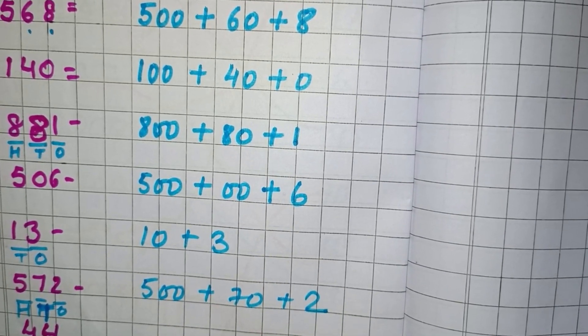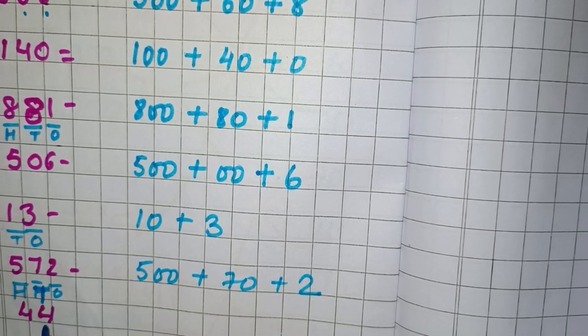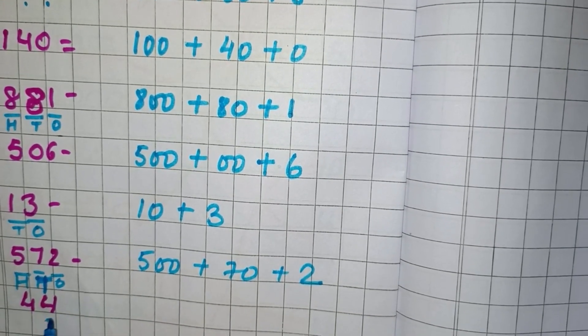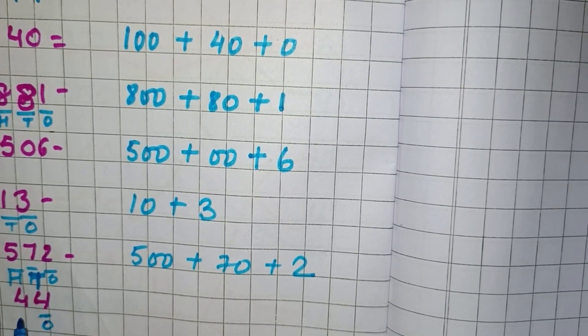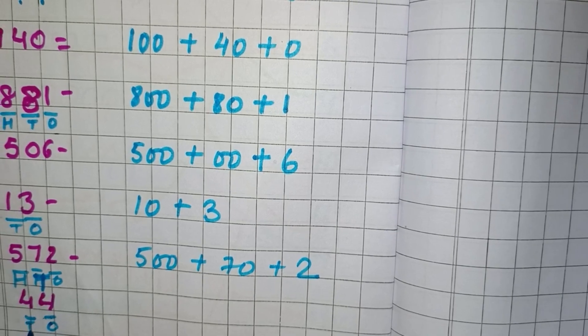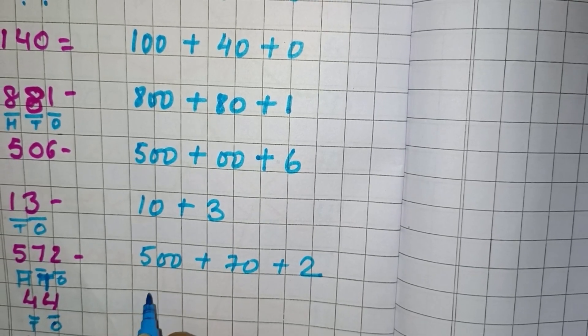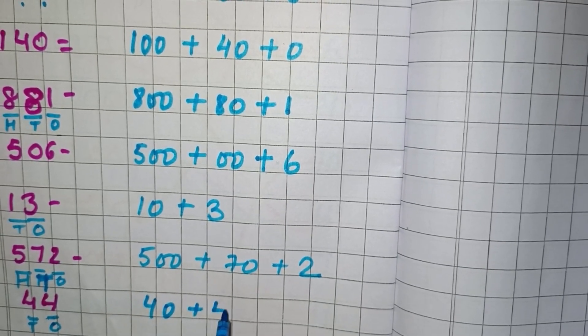Now next we have 44. So we can see 4 is in 1's place and another 4 is in 10's place. So we will write here 40 plus 4.